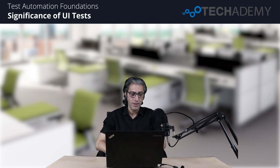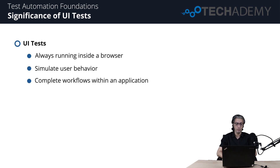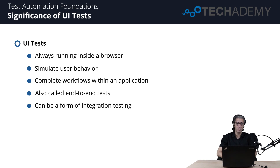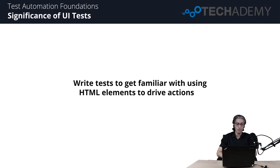Hi everyone and welcome to the session on UI tests. Quick and effective lower-level unit and integration tests are sometimes not enough — UI tests help implement a complete picture of test coverage. UI tests always work inside a browser and simulate user behavior by completing workflows within an application. They are also called end-to-end or functional tests because they examine the entire application from the front-end UI to the back-end database. These tests are the hardest to set up, requiring a specific browser type and version.